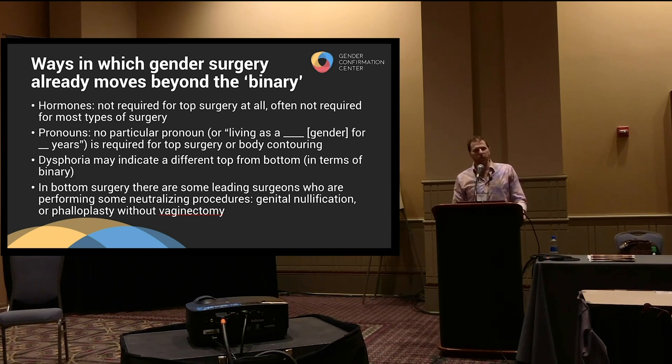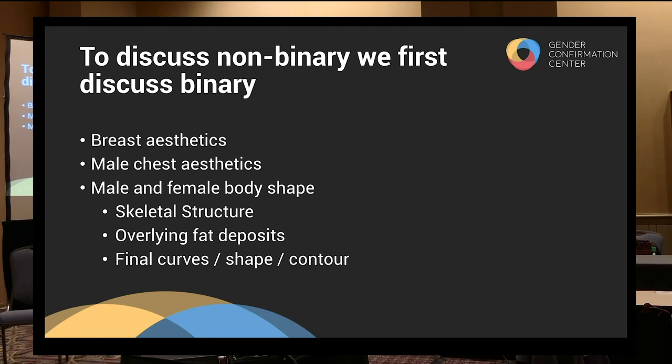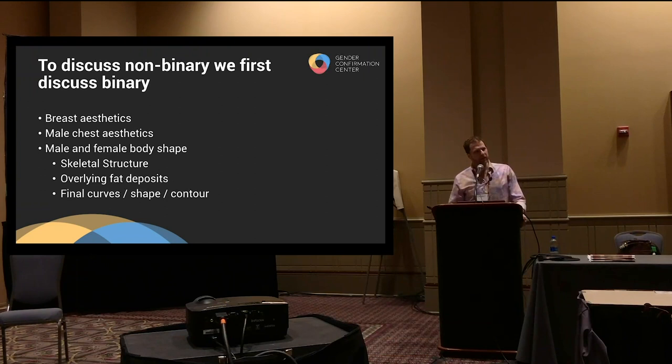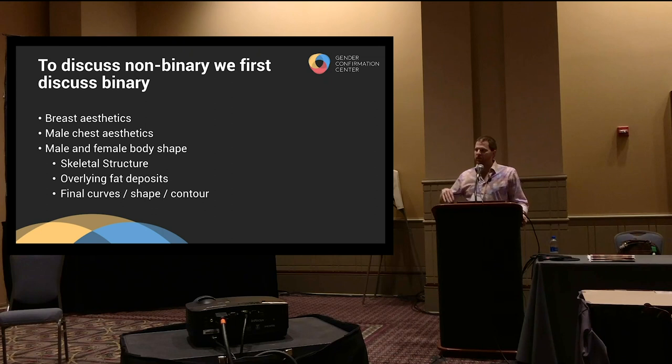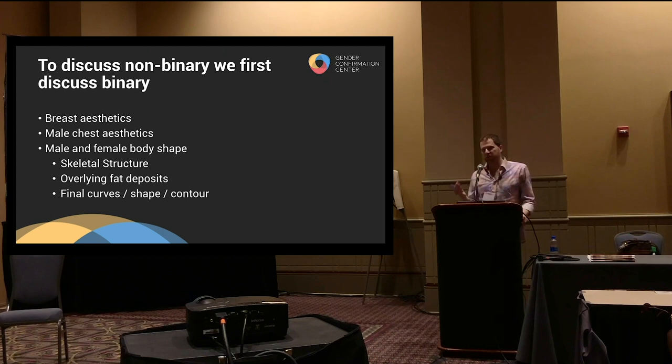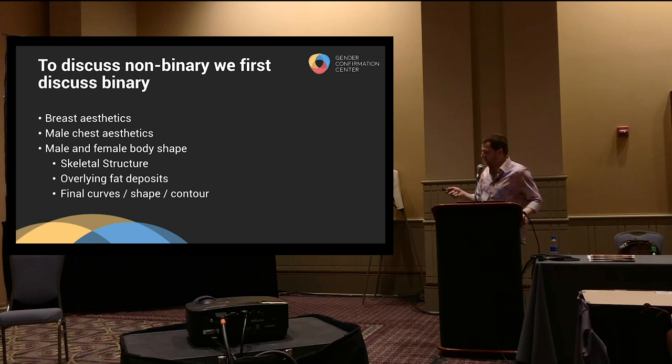To discuss non-binary, we have to discuss the binary at least a little bit. I want to talk about what society has determined to be a beautiful breast with appropriate characteristics, what society has determined to be an appropriate male chest, and then for body contouring: what are the key components of skeletal architecture, why do they form, what can we not change at all with current technology in the hip and pelvis area, and what happens with the overlying fatty deposits?